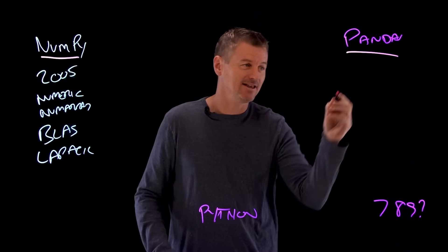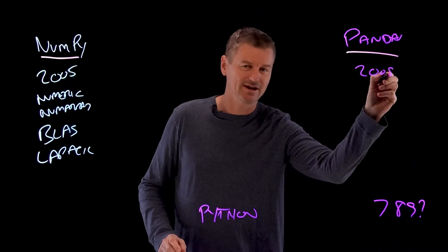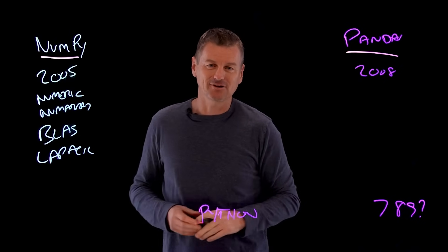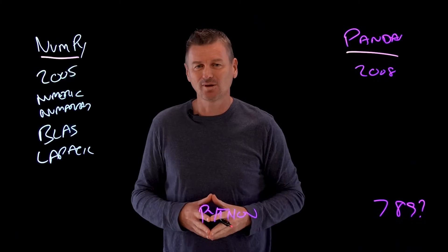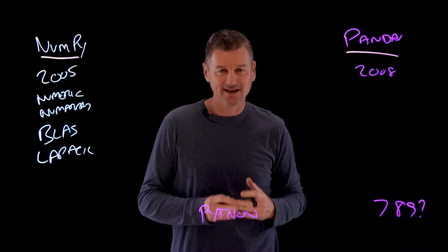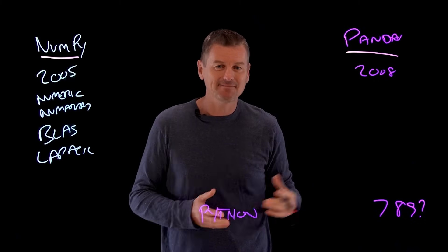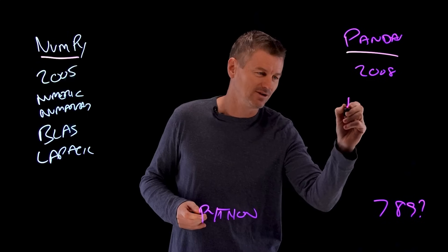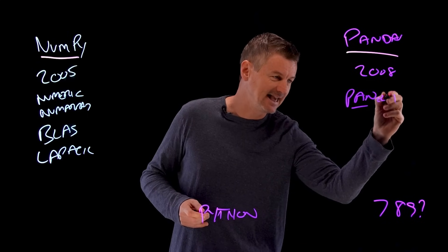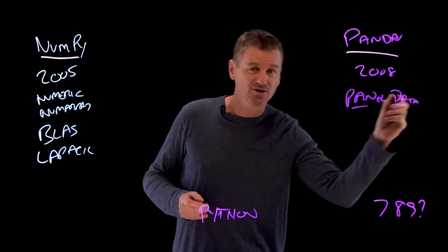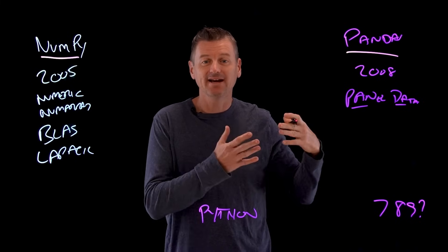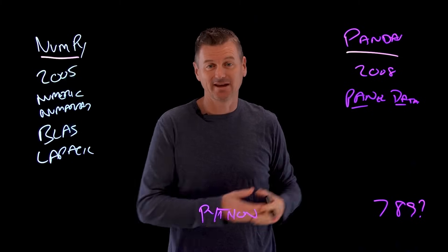Pandas got its start in 2008, when developer Wes McKinney was looking for a powerful and flexible tool for programming quantitative analysis on financial data. Pandas is named after the three-dimensional panel data which it works with, and it was made open source the following year.